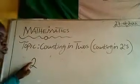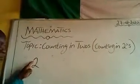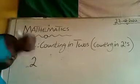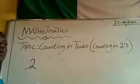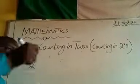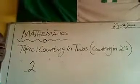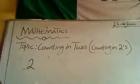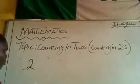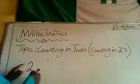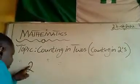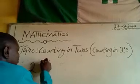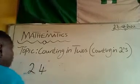First of all, 2 will be given, and you are to add 2 to each number. 2 is given. I am going to add 2 to this 2. When I add 2 to this 2, I will have 4.